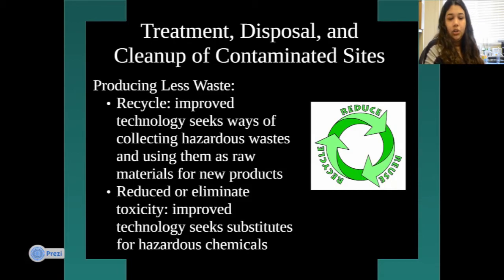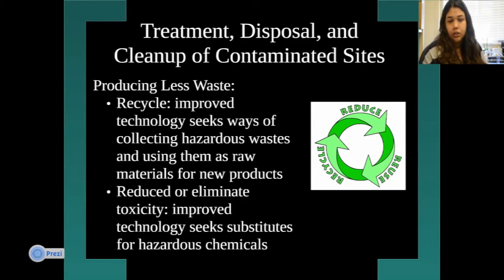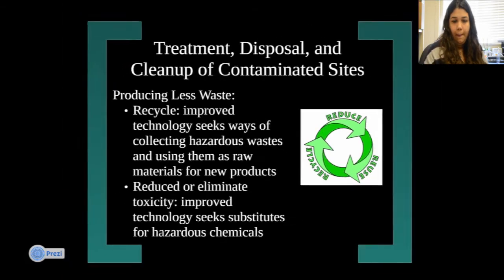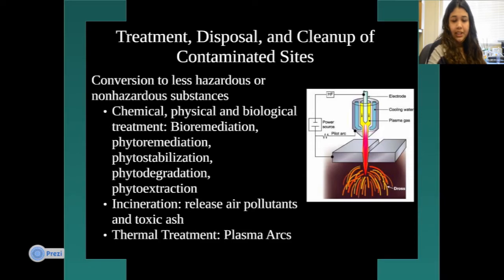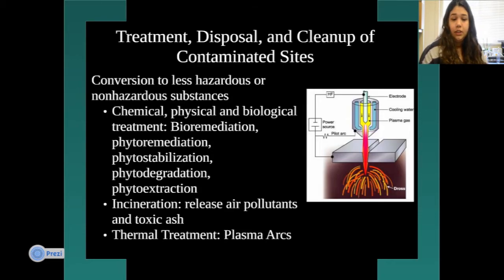There's also reduced or eliminated toxicity, using improved technology to find substitutes for hazardous chemicals — better alternatives instead of using toxic substances. There's also conversion to less hazardous or non-hazardous substances, changing to something not as dangerous. Chemical, physical, and biological treatments include bioremediation, biostabilization, and biodegradation. You just need to know there are different types of chemical and biological treatments.